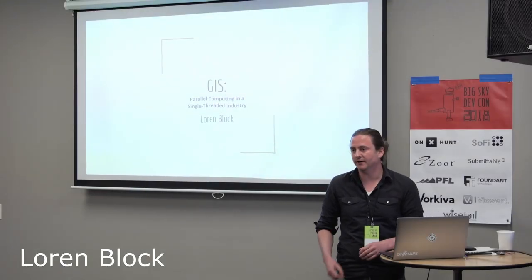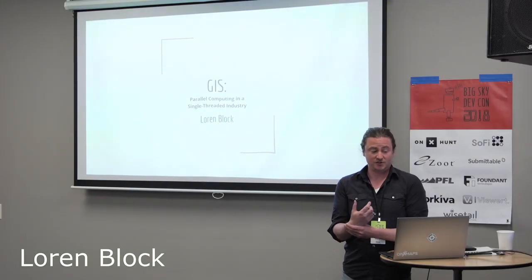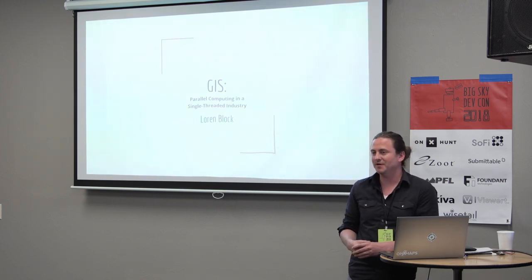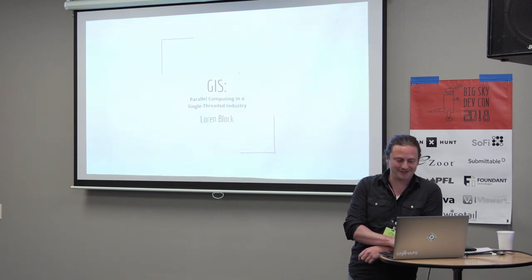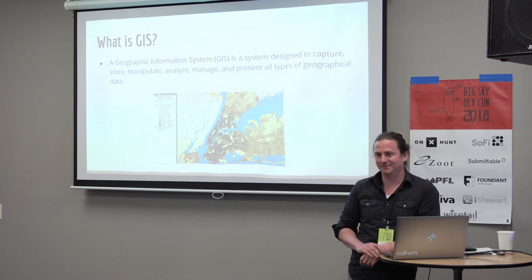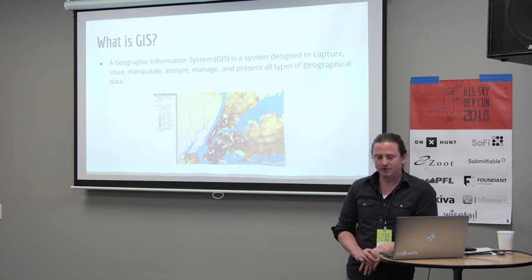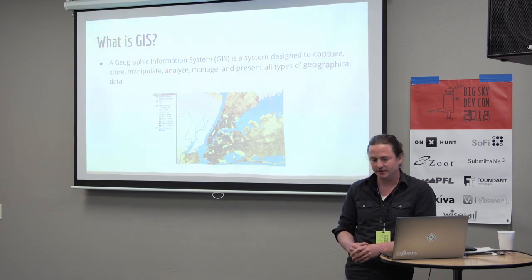I'm Loren Block. I work at Onyx Maps. I'm talking about GIS and specifically parallel computing. How many people don't know what GIS is? I'll just quickly define this for people that are confused. GIS is a Geographic Information System — essentially an information system that has some type of geographic information in it.